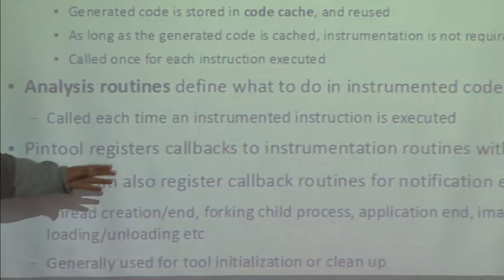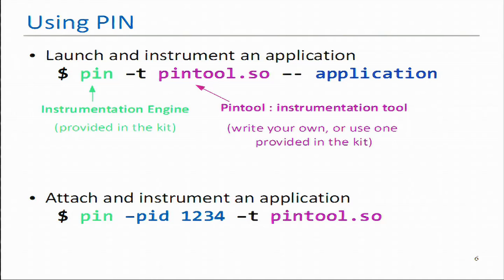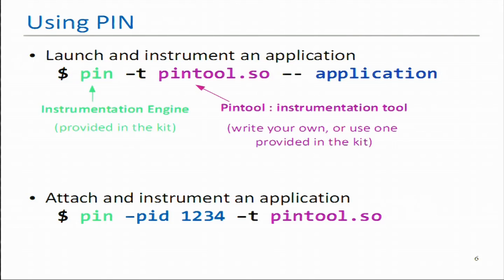These event notifications are generally used for initializing and cleaning up parts of the PIN tool. Your PIN tool is a C/C++ program — you compile it into a .so shared library file. You supply this PIN tool to the instrumentation engine as a command line argument, and after a double slash you supply the application binary to instrument. You can also attach PIN to an already-running process by supplying the PID with the -pid command line option.